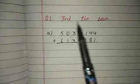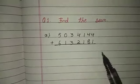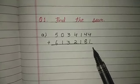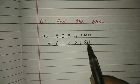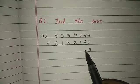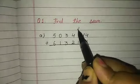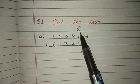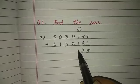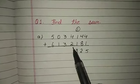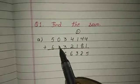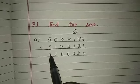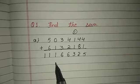Question number 1: find the sum. 4 plus 1 equals 5. 4 plus 8 equals 12 — write 2 and carry 1. 1 plus 1 is 2, and 2 plus 1 is 3. 4 plus 2 is 6. 3 plus 3 is 6. 0 plus 1 is 1. 5 plus 6 is 11 — write 1 and carry 1.